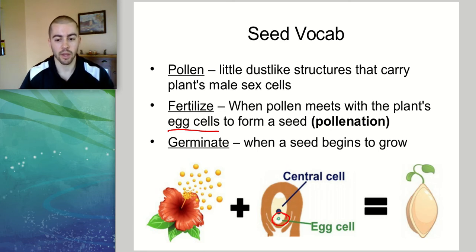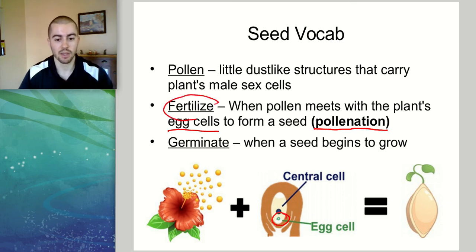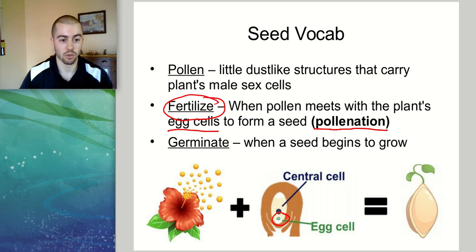That's called pollination when that happens. When a flower is pollinated, the pollen hits the egg cell and fertilizes it, which means it makes the egg cell able to grow into a seed.